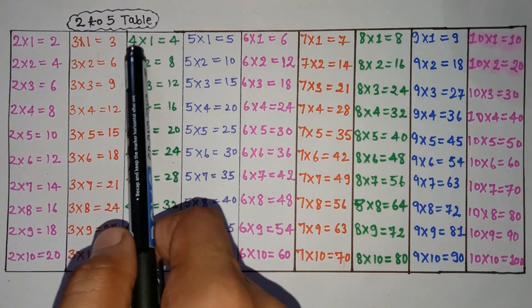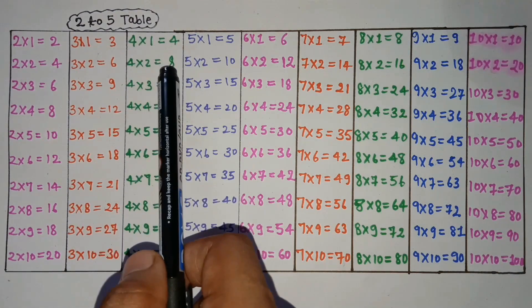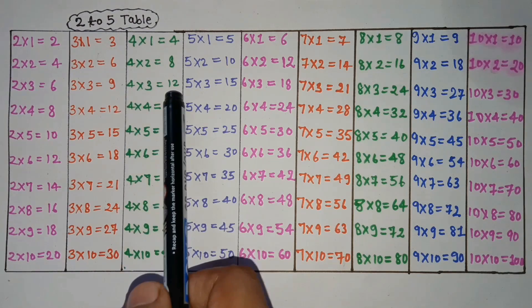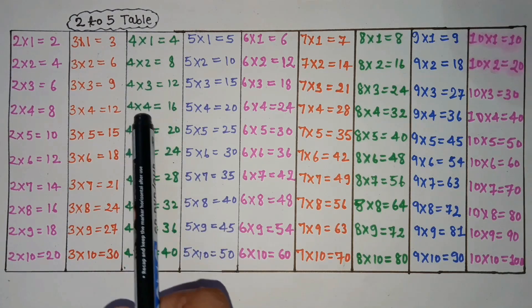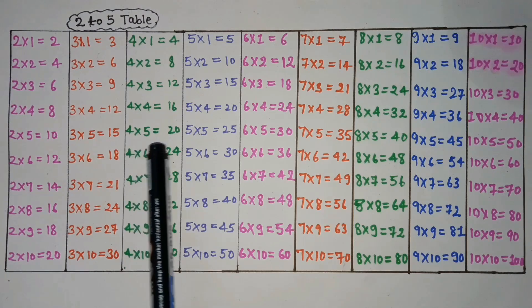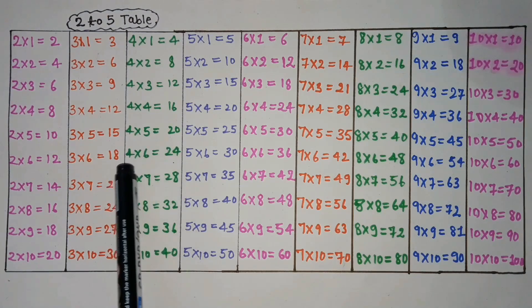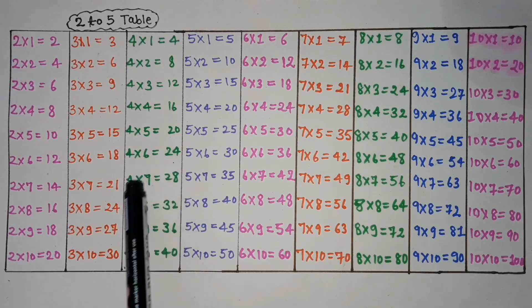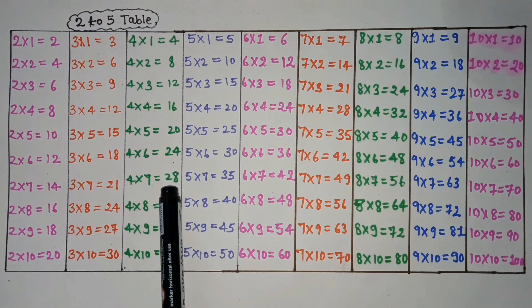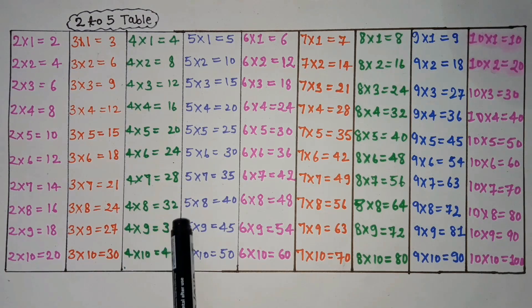4 ones are 4. 4 twos are 8. 4 threes are 12. 4 fours are 16. 4 fives are 20. 4 sixes are 24. 4 sevens are 28. 4 eights are 32.